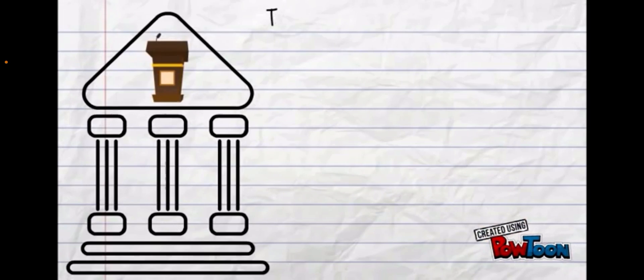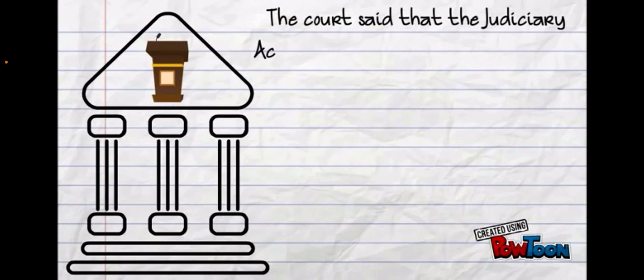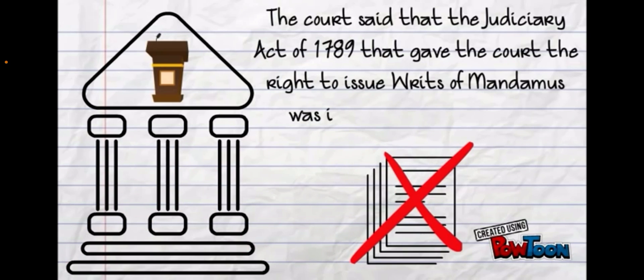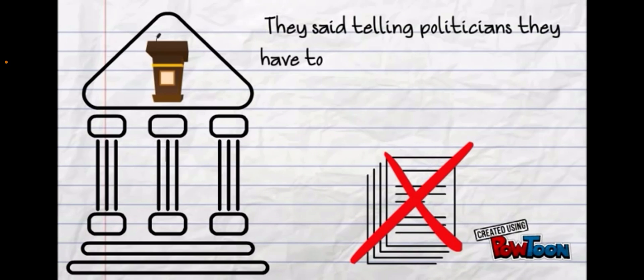The court said that the Judiciary Act of 1789 that gave the court the right to issue this writ was in fact unconstitutional. They said telling politicians they have to do their job was not among the duties given to the court in the Constitution.